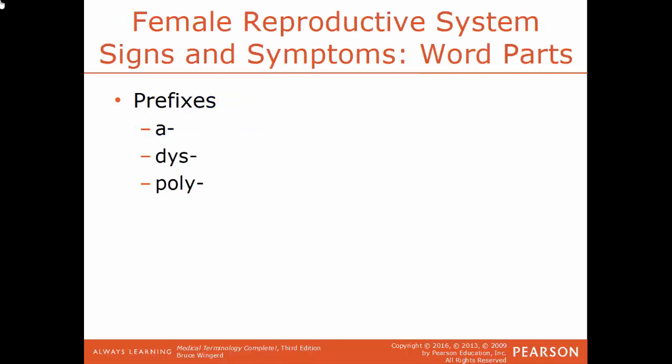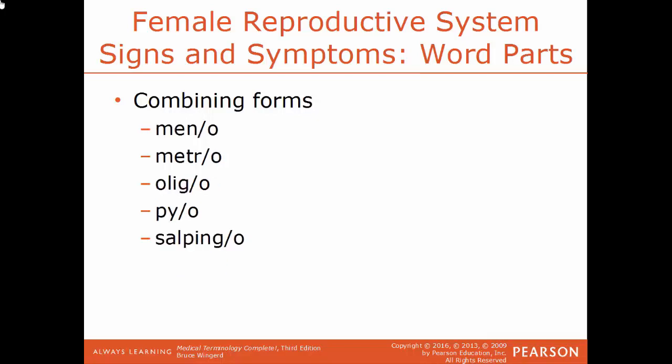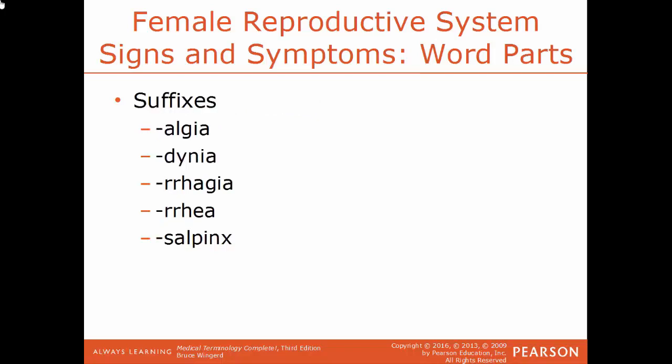Now we'll talk about the female reproductive system — some signs and symptoms. Word parts: prefix A means lacking or without; dis means painful or abnormal; poly means more than one. Combining forms: colpo is a reference to the vagina; hemato is blood; hydro is water; leuco is white; mammo and masto both reference the breast; meno is menstruation; metro is the uterus; oligo is a few; pio is pus; salpingo is the fallopian tube. Suffixes: algea and dynia both reference pain; rhagia is a bursting forth of blood; rrhea is a discharge or flow.